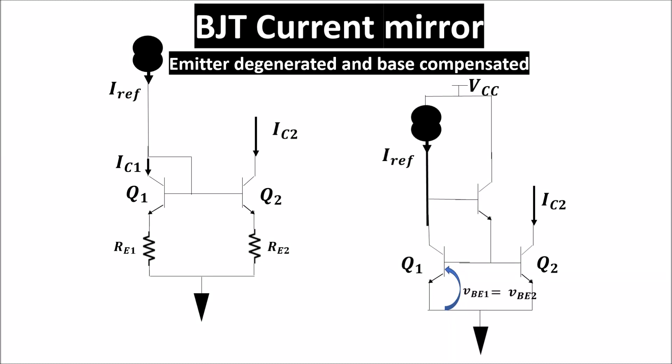This video is about BJT current mirrors, which are widely used for biasing purposes. We see two improvements to the basic current mirror: the emitter degenerated and the base compensated current mirrors.